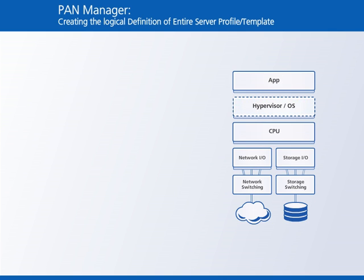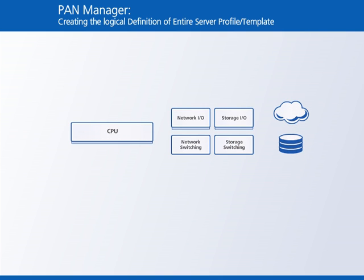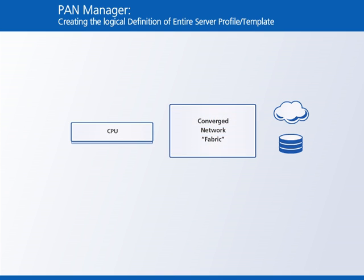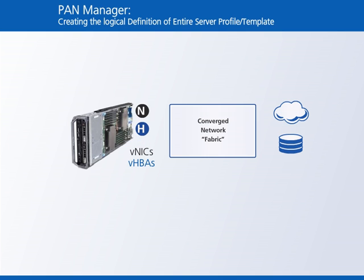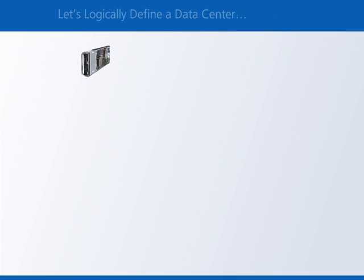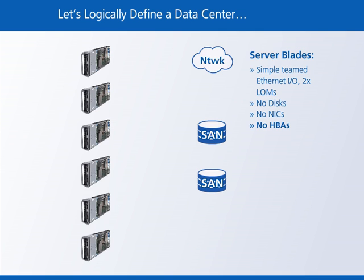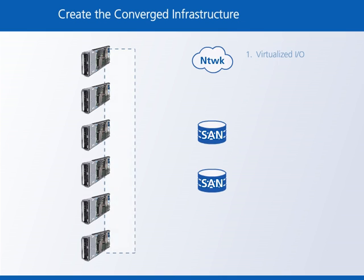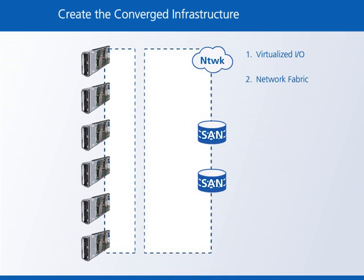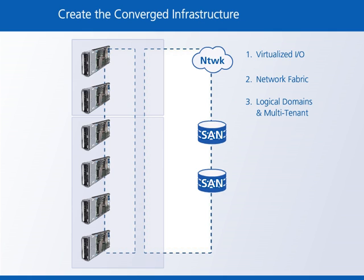By logically defining the server profile, PanManager allows you to create an environment where CPUs, networking, and connectivity are all instantly reconfigurable. Ultimately, the virtual I.O. and networking components represent a converged fabric, and each server becomes a stateless resource with its own virtual NICs and virtual HBAs. We start with standard X86 blades with standard Ethernet LAN on motherboard ports — blades don't have any disks, nor do they require any physical NICs or HBAs; they're all virtual. Using only software, PanManager virtualizes all of the I.O. on all of the blades and then further virtualizes the switching fabric, creating a logically configurable network between servers, storage, and the rest of your data center network. PanManager can even create secure, logical domains of server pools and networking for multi-tenant applications.